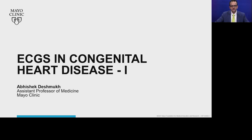Congenital heart disease is fairly common, as most of the patients who got operated as a child are living up to adulthood. It is also not uncommon for us to pick up certain congenital heart disease which gets manifested in adulthood. Hopefully this little primer on ECGs may help you understand how to approach patients with abnormal ECGs and when to think there might be a congenital heart disease hiding somewhere.